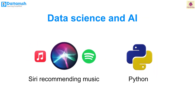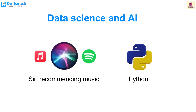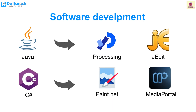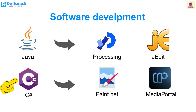Instagram is built using Python and the Django web framework for server-side operations, leveraging Python's efficiency and scalability. Data science and AI: when you ask Siri or Google a question, Python helps the voice assistants understand and respond. Python is used to analyze data and make smart predictions, like answering your questions and recommending music. Software development: the programs you use for drawing, writing, or listening to music on your computer are created with languages like Java and C#. These languages help make sure the software works well and follows instructions given by the user.